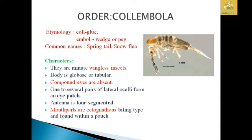They are minute wingless insects and the body is globose or tubular in structure. Compound eyes are absent in these animals. One to several pairs of lateral ocelli forming an eye patch are present. The antennae are 4-segmented and the mouthparts are entognathous, which are of the biting type and found in a pouch.